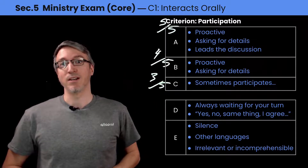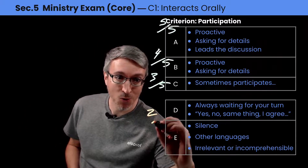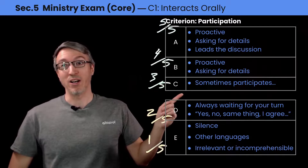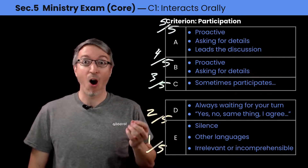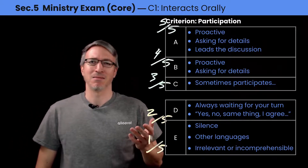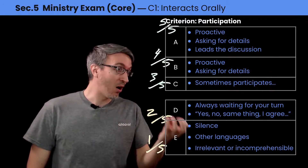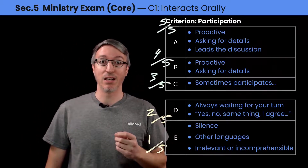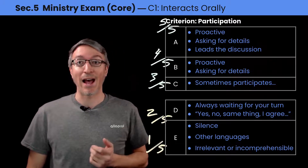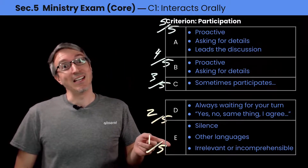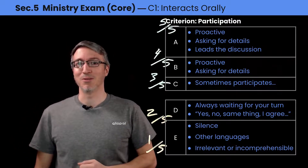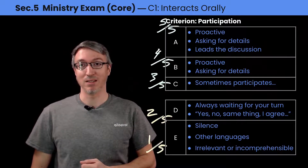You fall into D and E criteria — two on five and one on five — when you're always waiting for your turn and don't participate unless someone specifically asks your opinion. That's waiting too much. Or when you talk with the others and the only thing you say is 'I agree with you' or 'yes, no,' without adding anything to the discussion. And finally, the E grade: if you're just silent or you switch to another language, you won't pass the participation criterion.